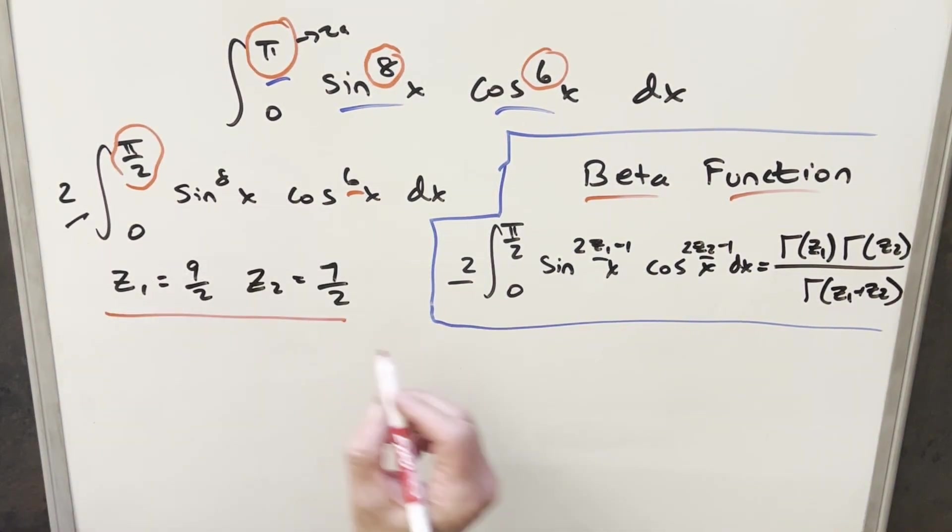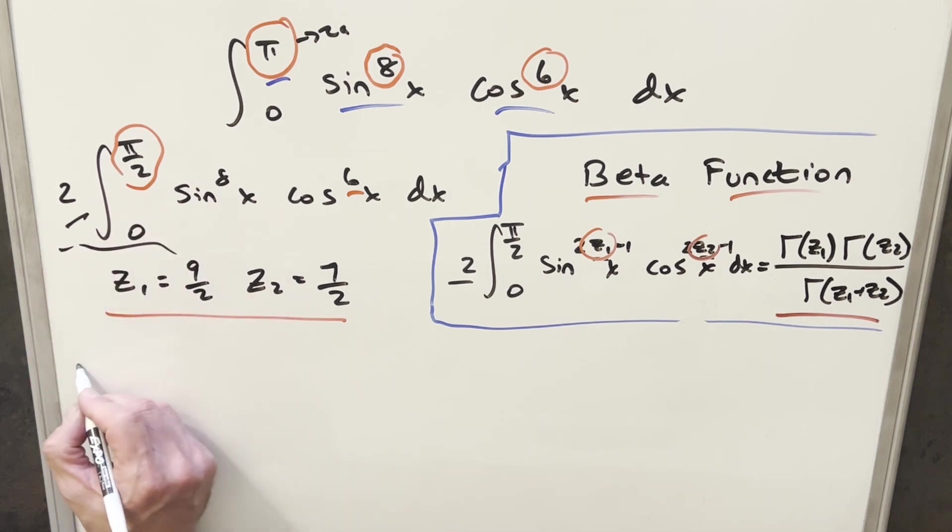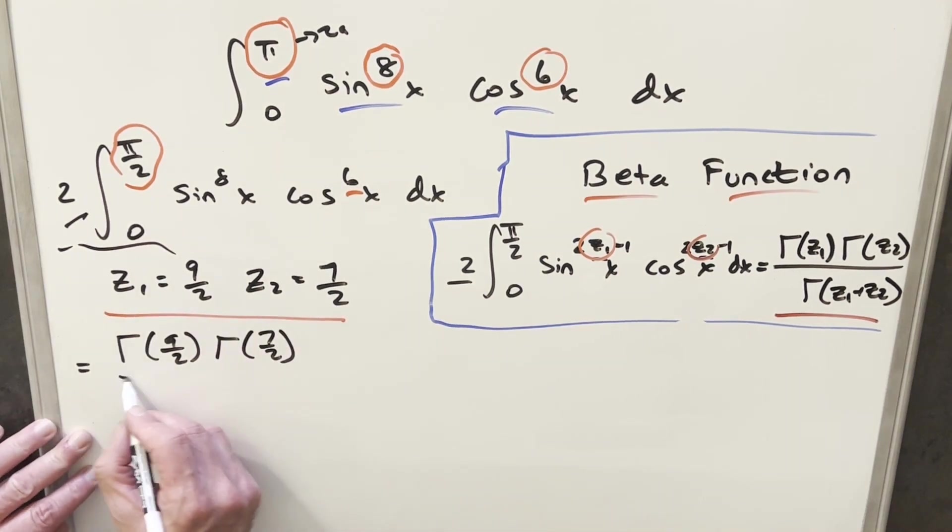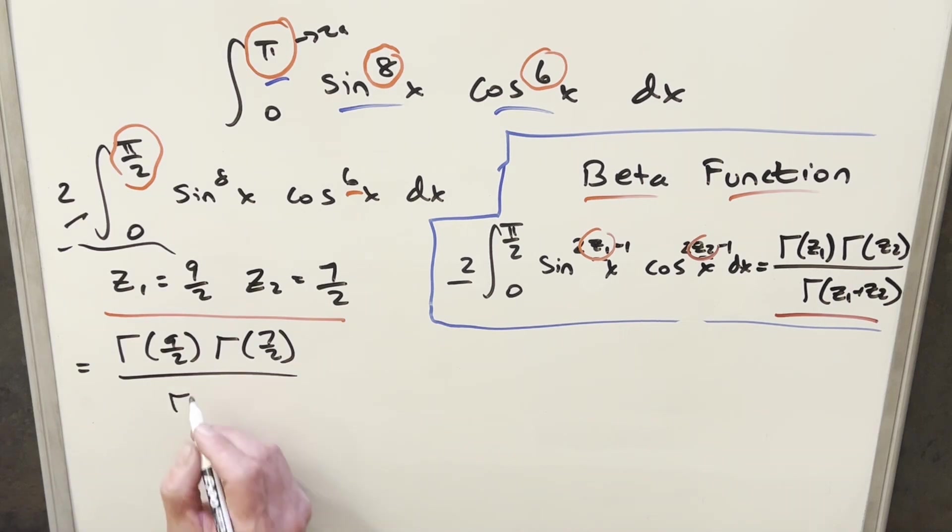So now that we have our z1 and z2 value, we have everything we need to express this and find a solution in terms of the gamma function. Using this formula, our integral is going to become now gamma of z1, which is 9 halves, gamma of z2, which is 7 halves, over gamma of the sum of these, which is going to be gamma of 16 halves, or just gamma of 8.